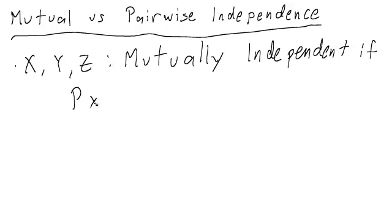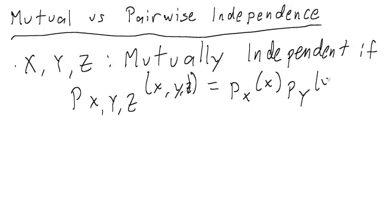That is, the distribution over all three of them, as simply the product of the three individual distributions. So if it's just px times py times pz, then we say that they're mutually independent.